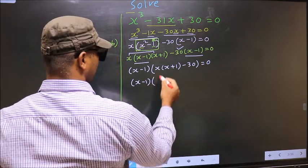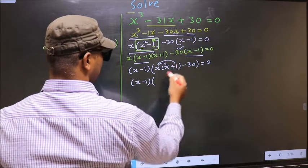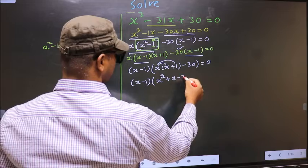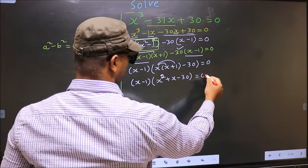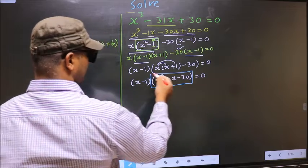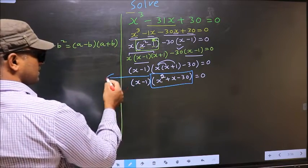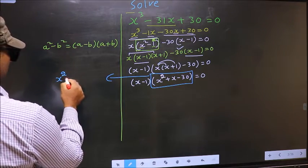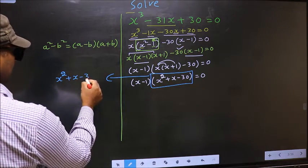Now x minus 1, here you open up the brackets in this way. You get x square plus x minus 30 equal to 0. Now we got quadratic here. So I will factorize this quadratic here, that is x square plus x minus 30.